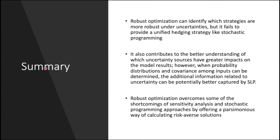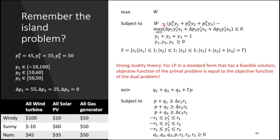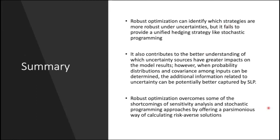The benefit of robust optimization is that it identifies strategies that are robust based on the decision maker's risk-taking ability. It combines aspects of stochastic programming with sensitivity analysis, giving us a range of solutions that are progressively less sensitive to the realization of uncertainty.